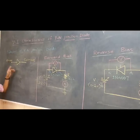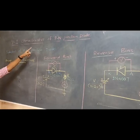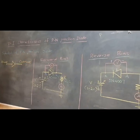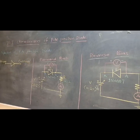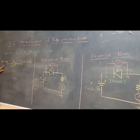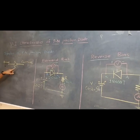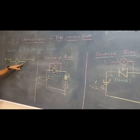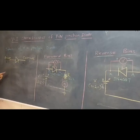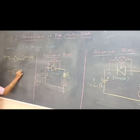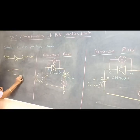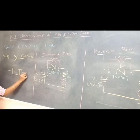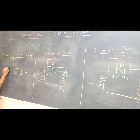Today we are going to see VI characteristics of a PN junction diode. This is the symbol of the PN junction diode. It has two terminals: anode and cathode. The cathode is identified with the silver band on the component.